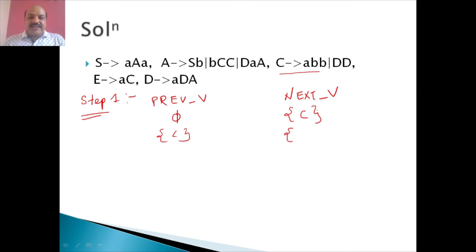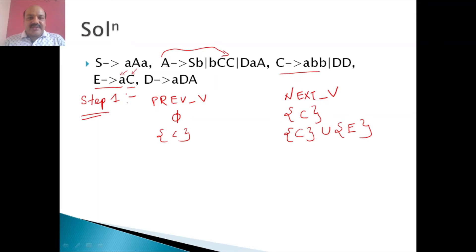Then we can see that E is deriving a in combination with C, so we are going to take the union including E. Simultaneously, considering the production A is rewritten as BCC, we can see that by using C and the terminal symbols, A is also deriving a terminal string. So after this step we are going to have {C, E, A}.